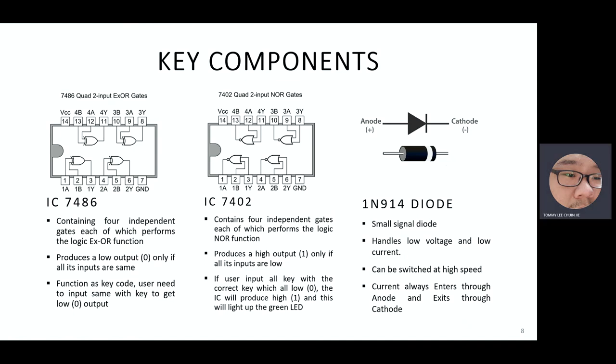And next, we use 1N914 diode. So this diode is a small signal diode. And it handles low voltage and low current. It can be switched at high speeds. So current will always enter through anode and exits through cathode. So basically, this diode is also a switching diode.